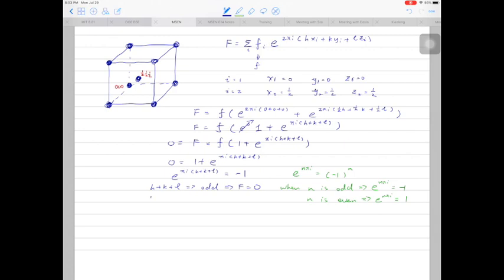If h plus k plus l is an even number, then f will be equal to 2f. And this is the structure factor of BCC crystals or BCC metals.